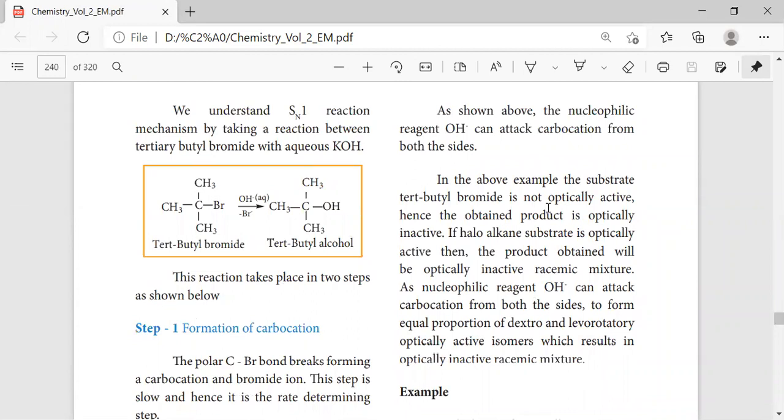This example shows that tertiary butyl bromide is optically active. This refers to the study with the help of a polarimeter so that we can predict whether the molecule is optically active or inactive, and also we can predict whether it is dextro-rotatory or levo-rotatory.